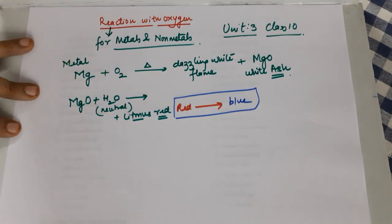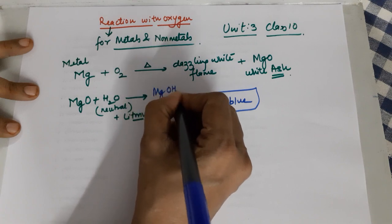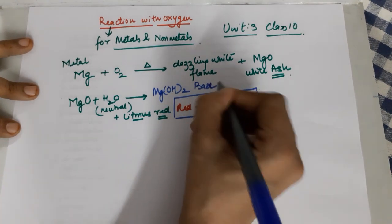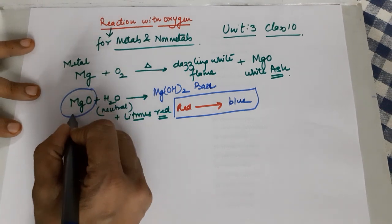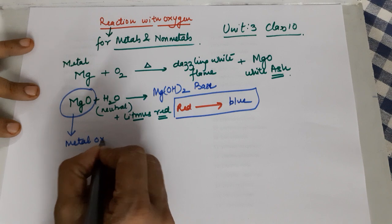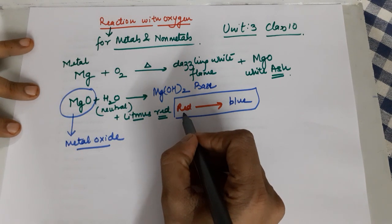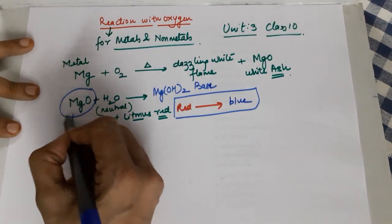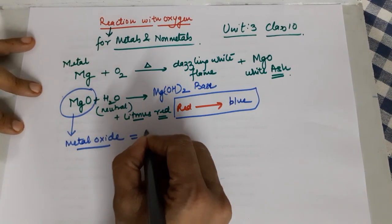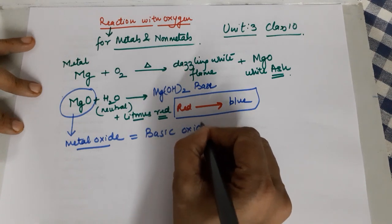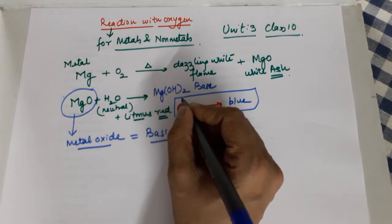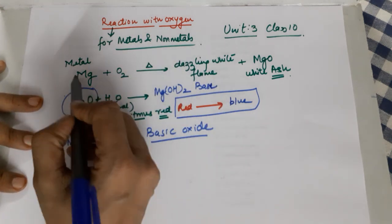What is observed is your red litmus changes to blue. Since red litmus is changing to blue, we conclude that whatever is formed in this reaction is a base. This metal oxide is the reason the litmus changed, because water is neutral and will not cause this change. So the metal oxide can be called a basic oxide, which then dissolves in water to form a metal hydroxide, which is basic in nature.